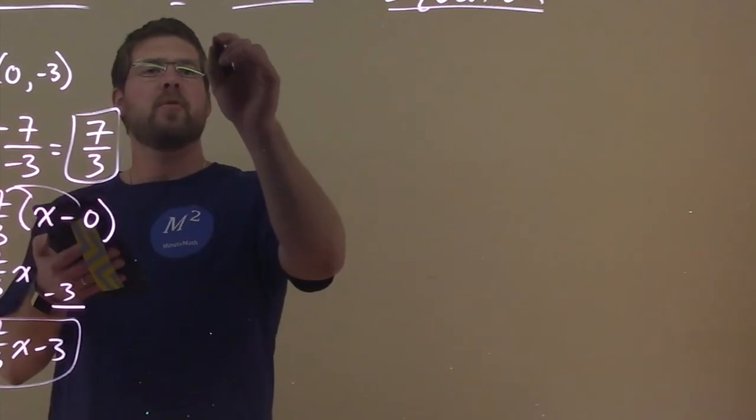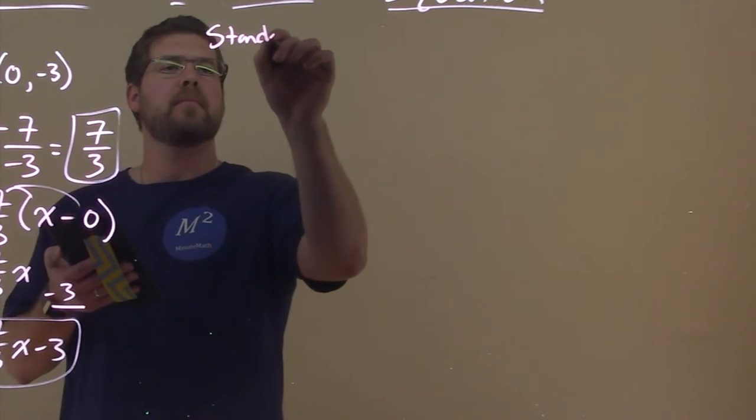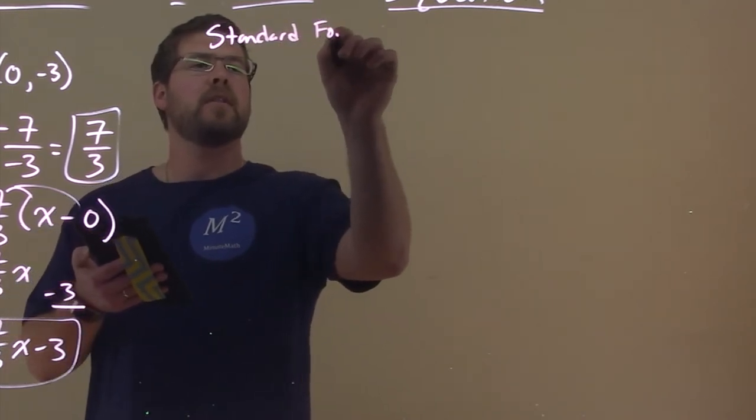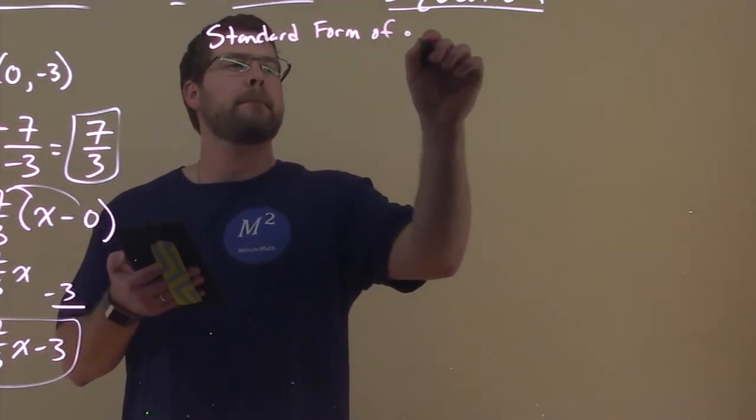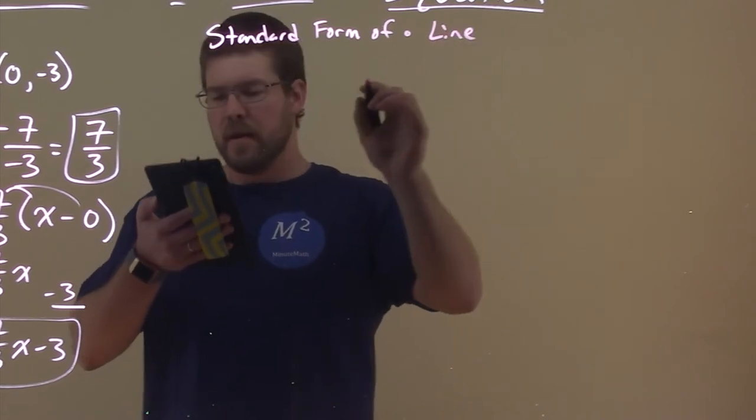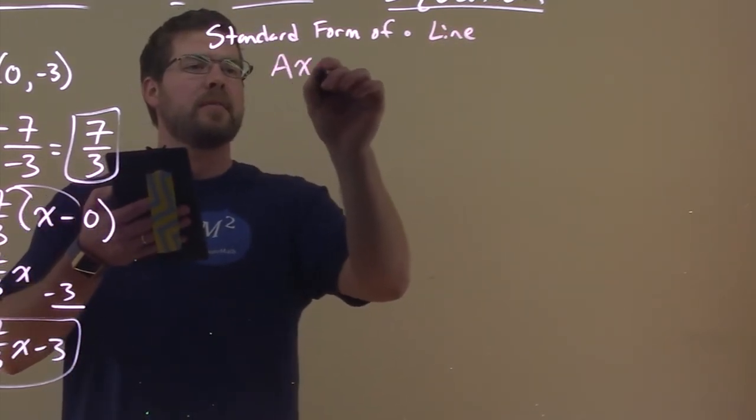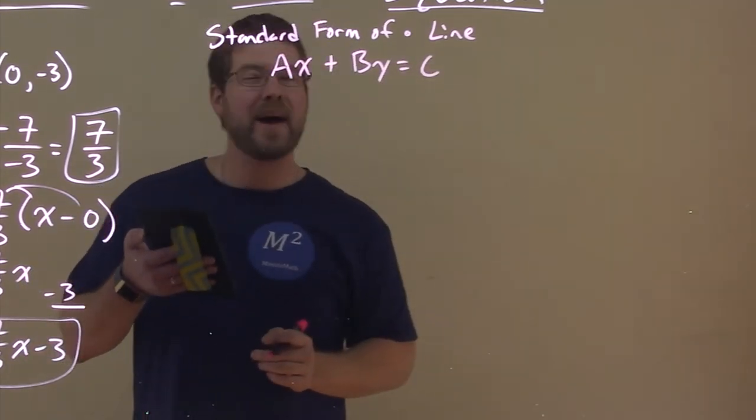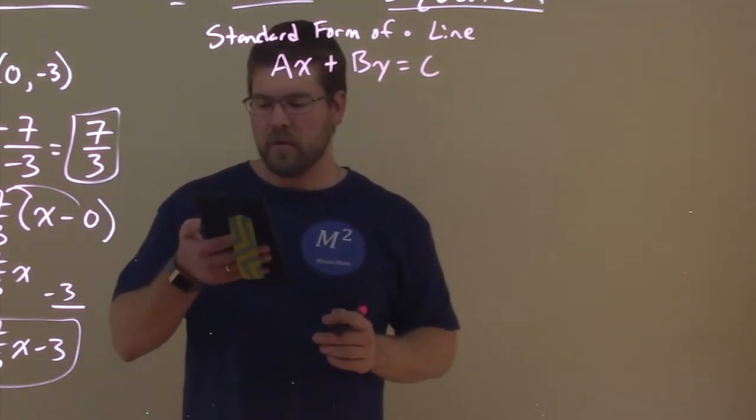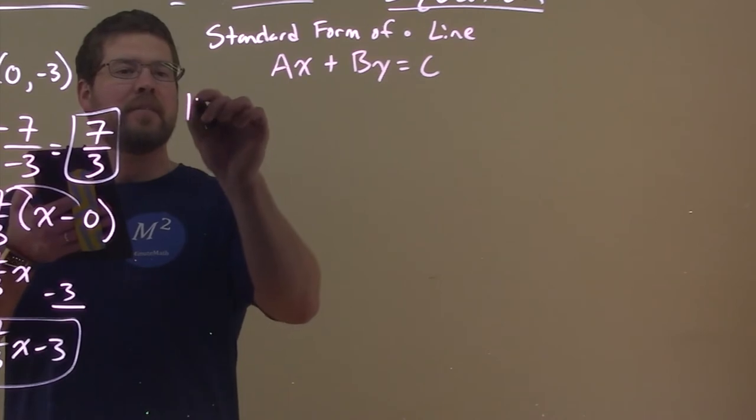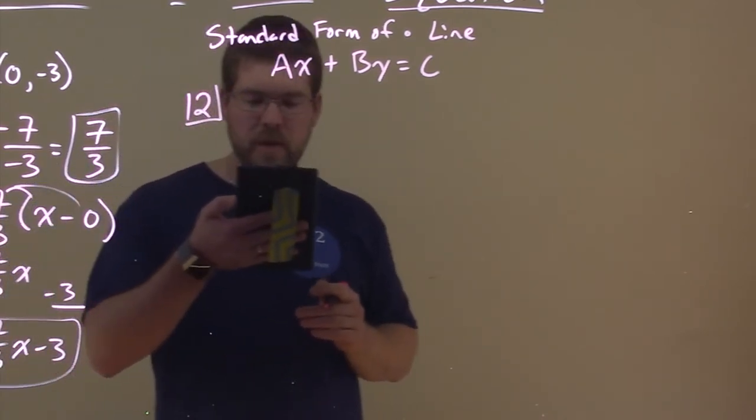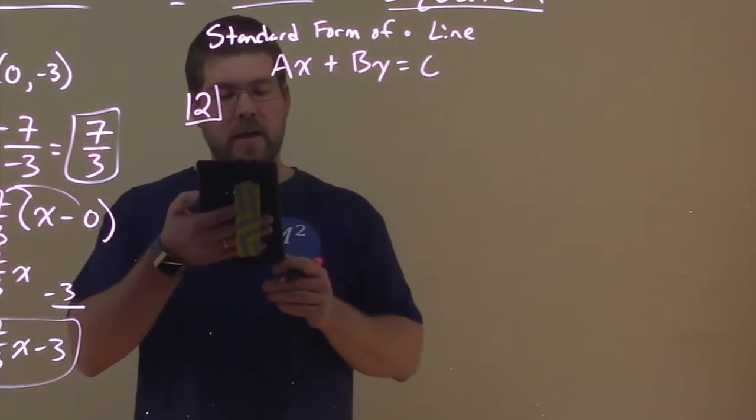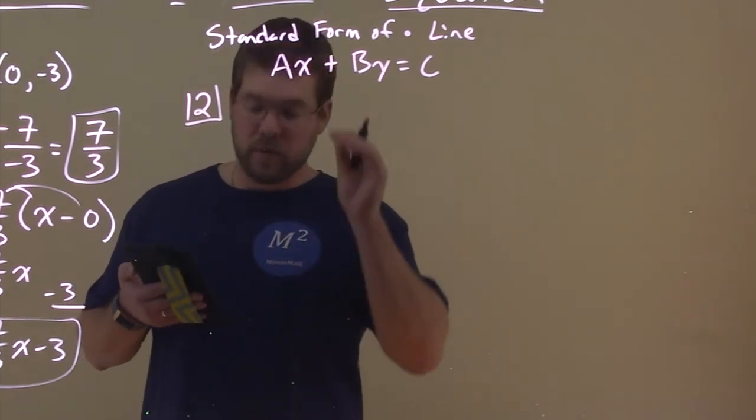Now, standard form of a line is written like this: AX plus BY equals C. We're kind of going through all the forms here. So what we want to do is, given for number 12, find the equation of a line and write it in standard form. That's our goal here.